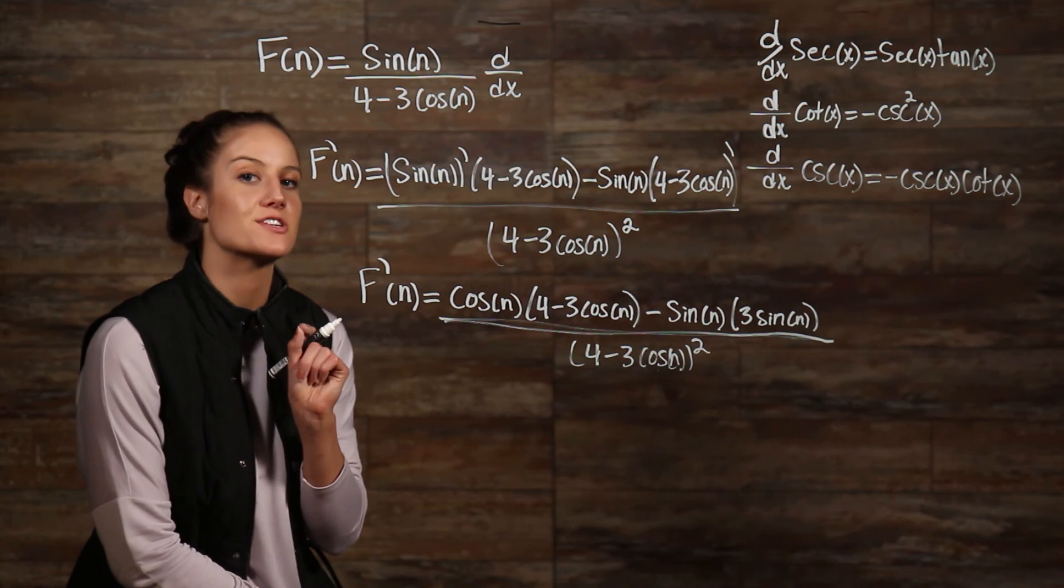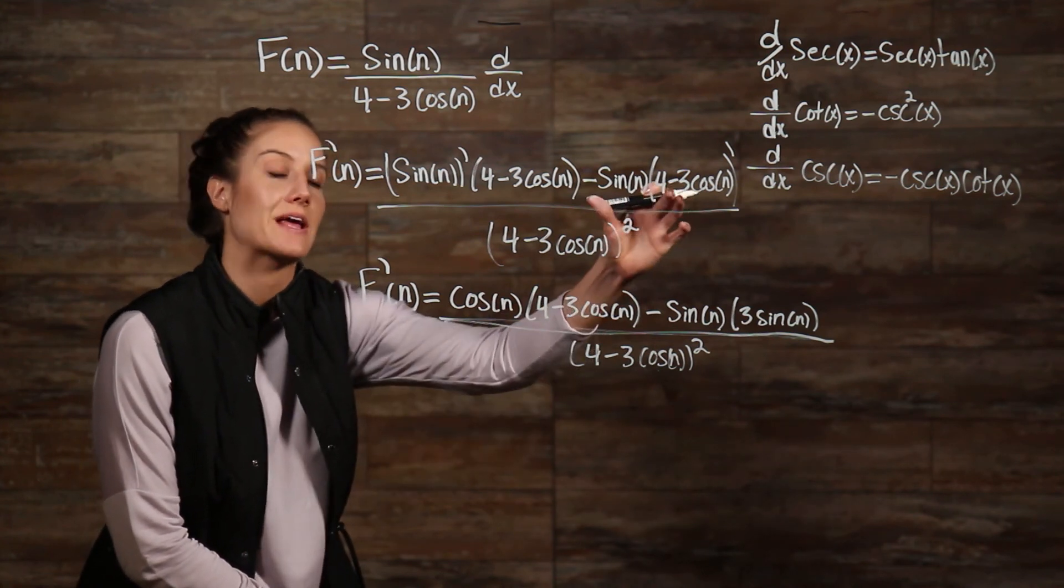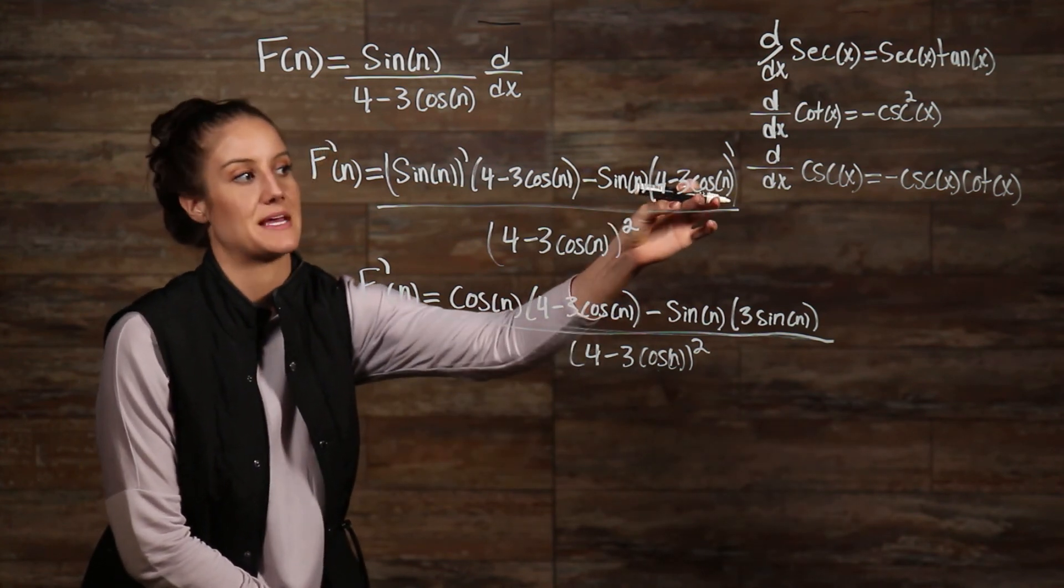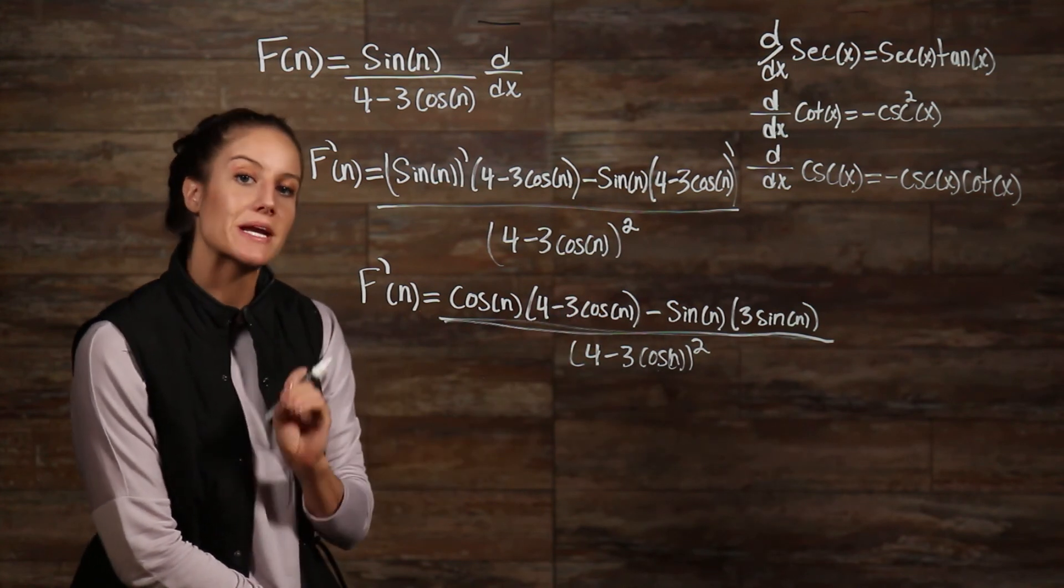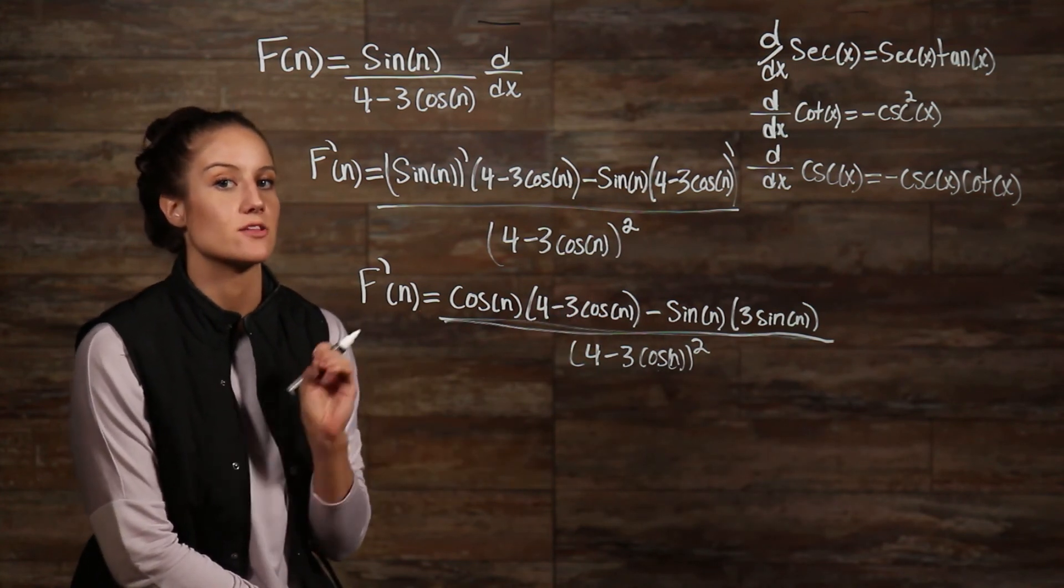Be careful to notice that when differentiating our cosine here, we already have a negative sign. So when it becomes negative sine, that's going to make it a positive sign. So now from here we can perform our operations in the numerator.